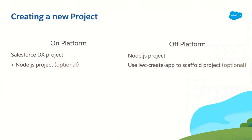When you're off platform, you use a Node.js project from the start. This is something we're providing out of the box. You could run your own server with something else, but the tooling we provide is running on Node.js, giving you the right configuration and setup. In particular, the tool called LWC Create App is a scaffolding project — basically an interactive script that will guide you through the setup of your project, and it's very efficient. I will show you that in a second.